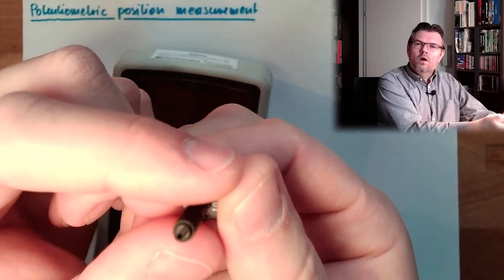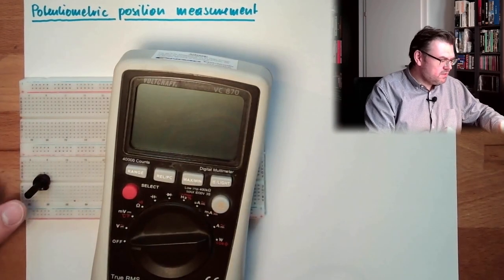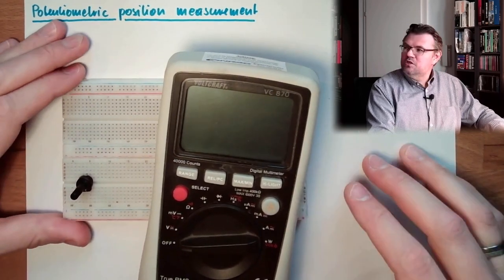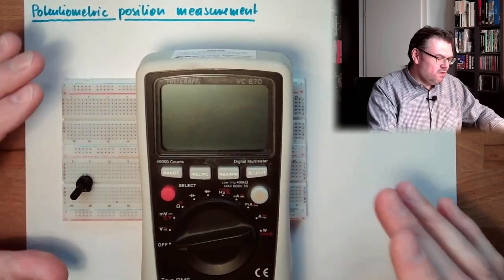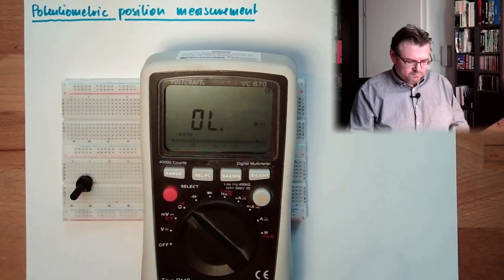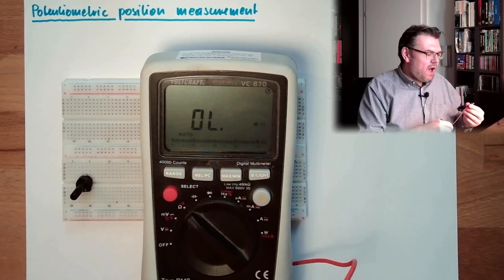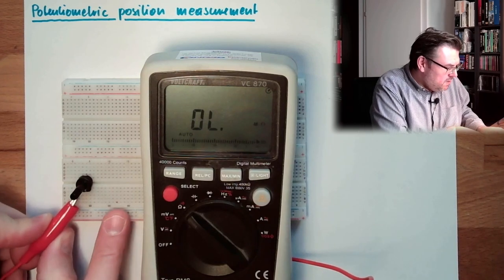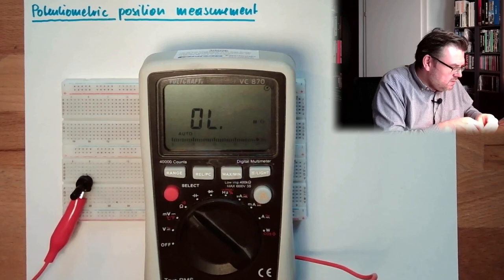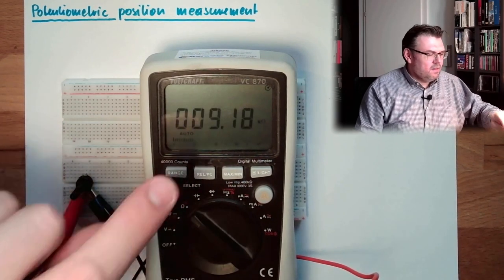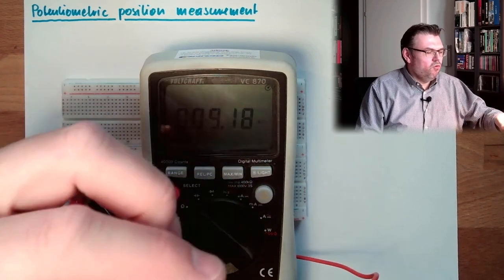Now let's have a look at what is happening. I have here a second potentiometer, and I can tell you it is changing the resistance. So I will switch here to resistance measurement. I will use the two connectors at the bottom. This one and this one. Let's see what we are measuring. 9.18 kiloohms.